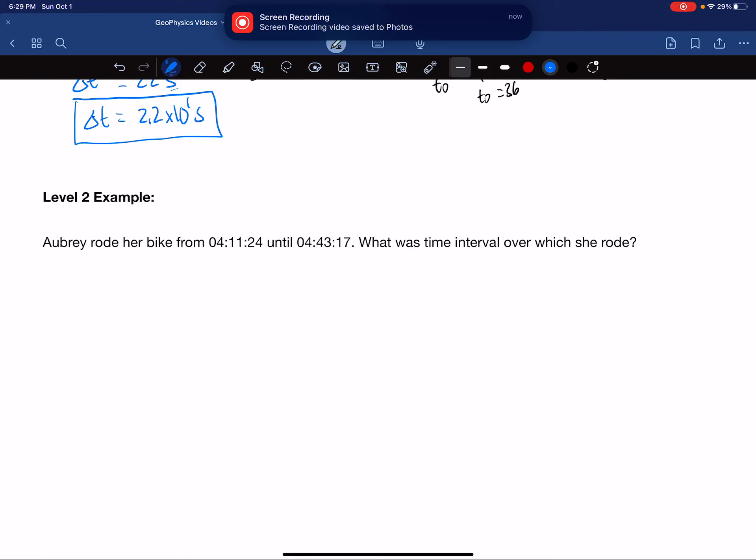In our level 2 example for time interval, we see that Aubrey rode her bike from this time to this time. It's pretty easy to recognize that this is the starting time, t0, and this was the time at the instant her motion was no longer of interest to us. We want to know the time interval, which is delta t.